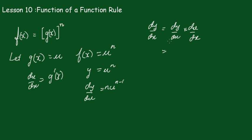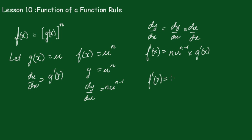Now dy/du is n·u to the n minus 1, and du/dx is g'(x). Now dy/dx is just f'(x), so f'(x) is equal to this. We can rearrange and write f'(x) is equal to n·g'(x), and remembering that u is g(x), it becomes g(x) to the n minus 1.